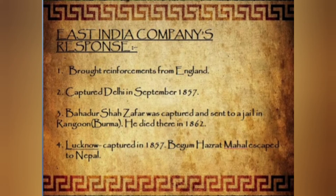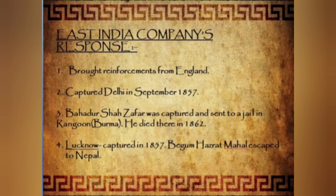In Kanpur, the revolt was led by Nana Sahib, the adopted son of Peshwa Baji Rao II. He joined the revolt primarily because he had been deprived of his pension by the British. He captured Kanpur and proclaimed himself the Peshwa, but this victory was short-lived. Kanpur was recaptured by the British after fresh reinforcements arrived, and the revolt was suppressed with terrible vengeance — rebels were hanged or blown to pieces by cannons. Nana Sahib escaped, but his brilliant commander Tatya Tope continued to struggle; Tatya was finally defeated, arrested, and hanged.